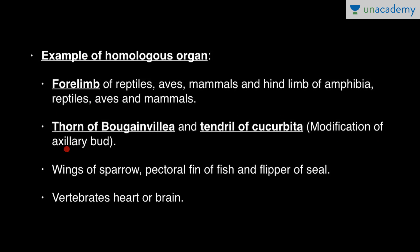The thorn of bougainvillea and the tendril of cucurbita are examples of homologous organs in plants. Both are modifications of the axillary bud — they have a common origin from the axillary bud, which is modified into a thorn in bougainvillea and a tendril in cucurbita.